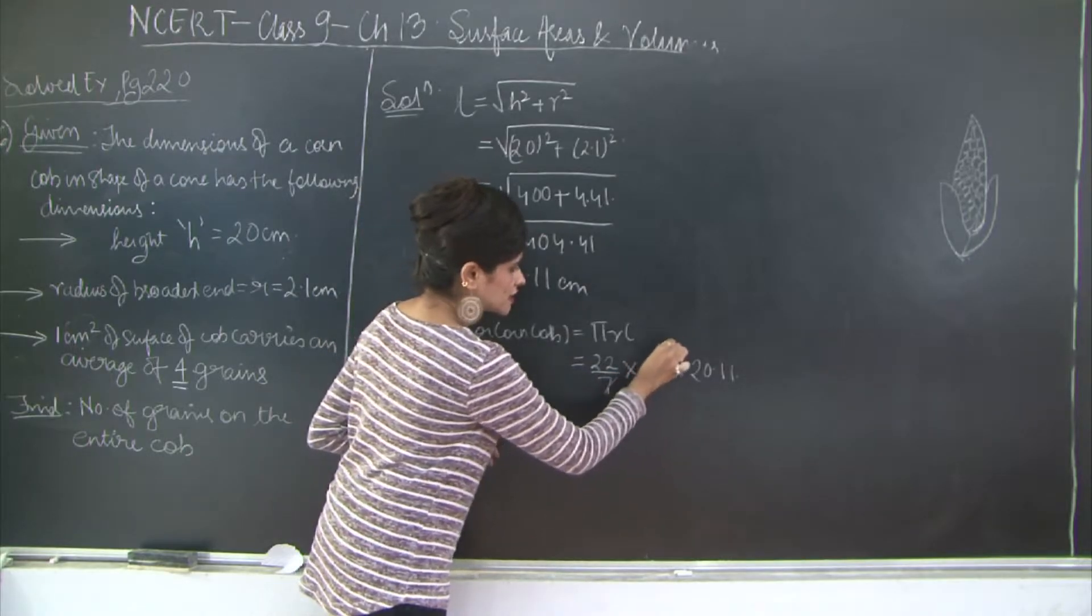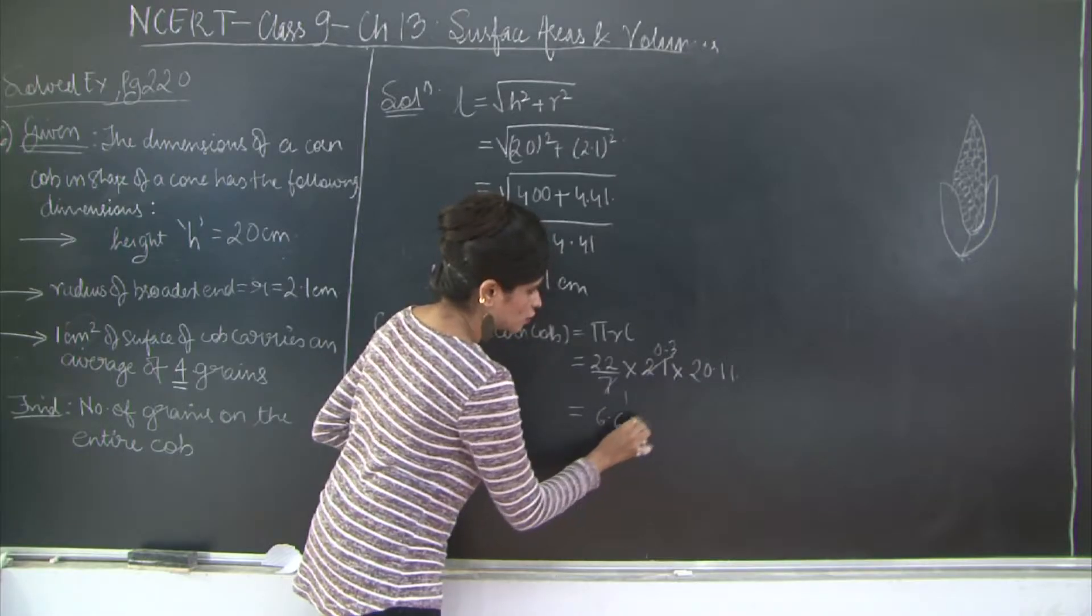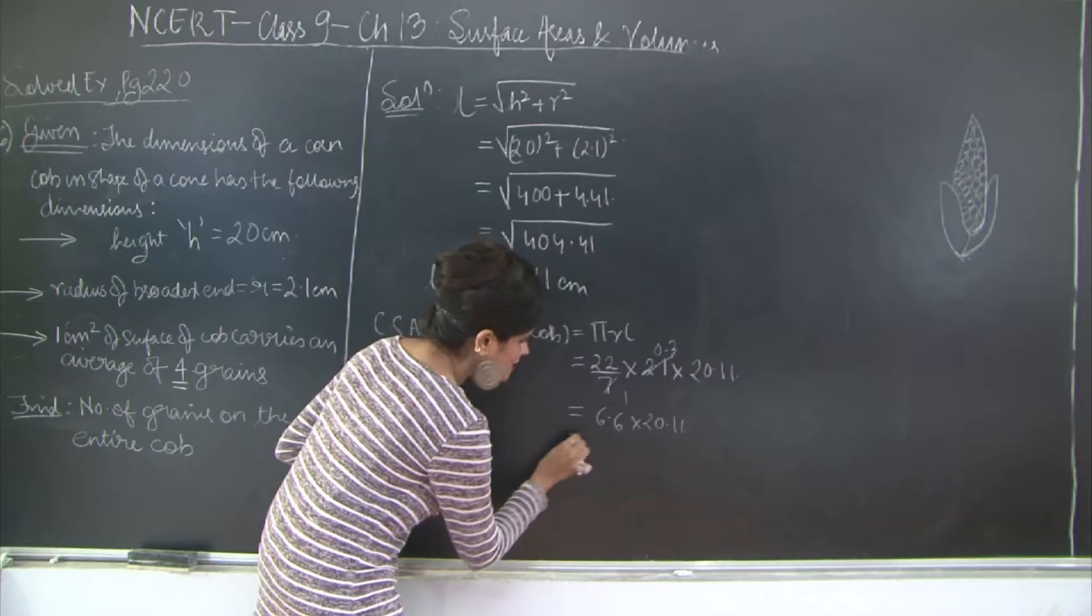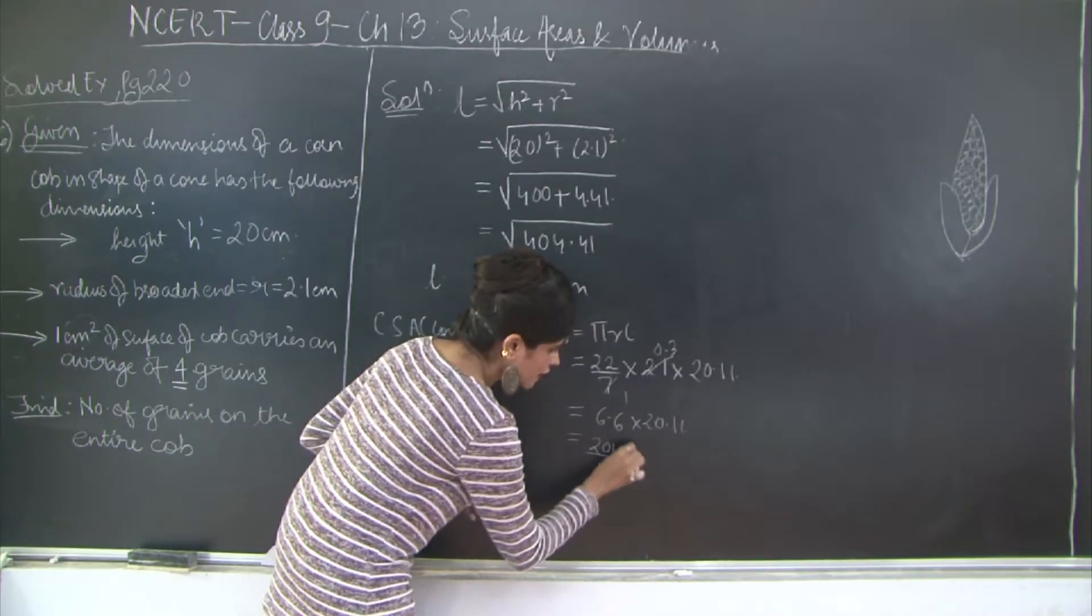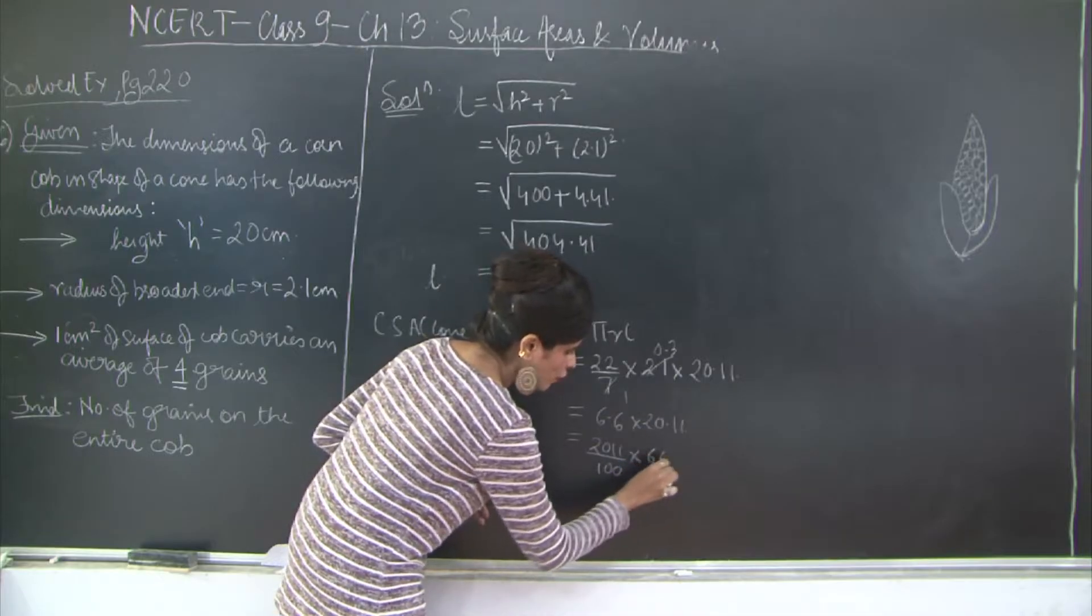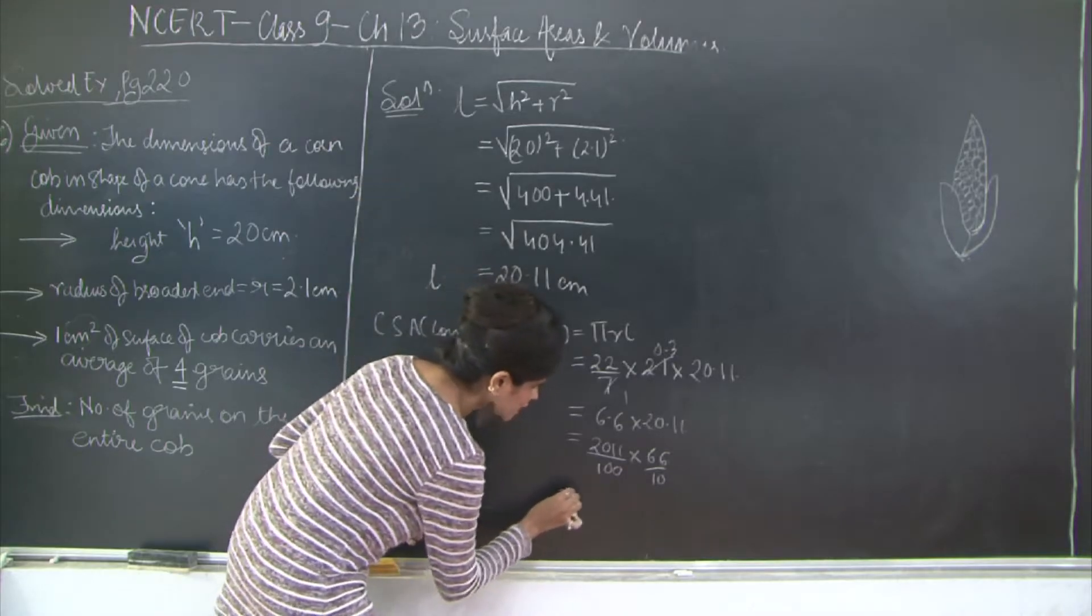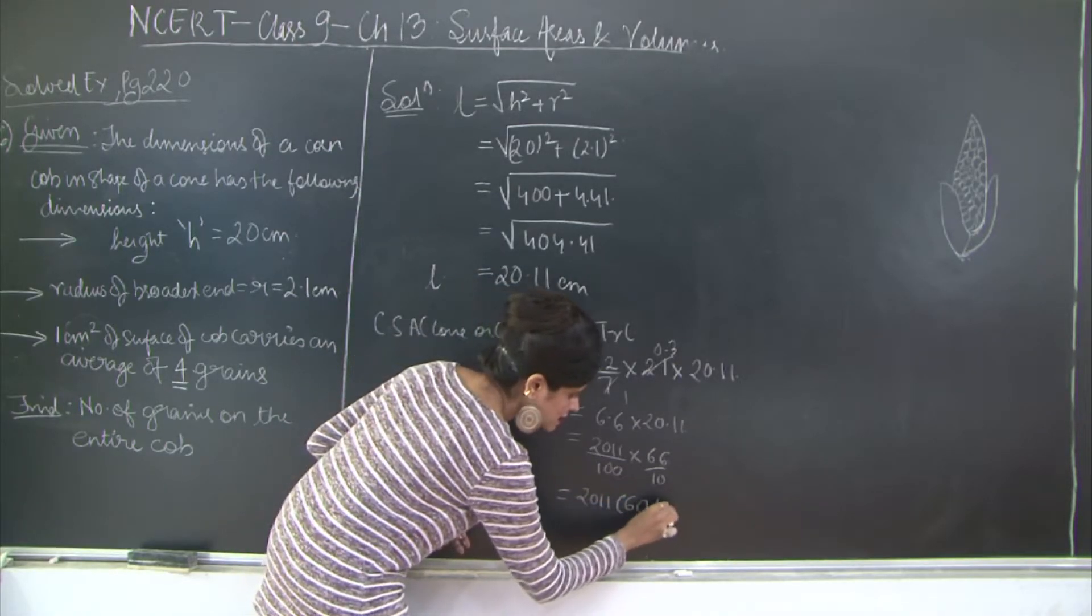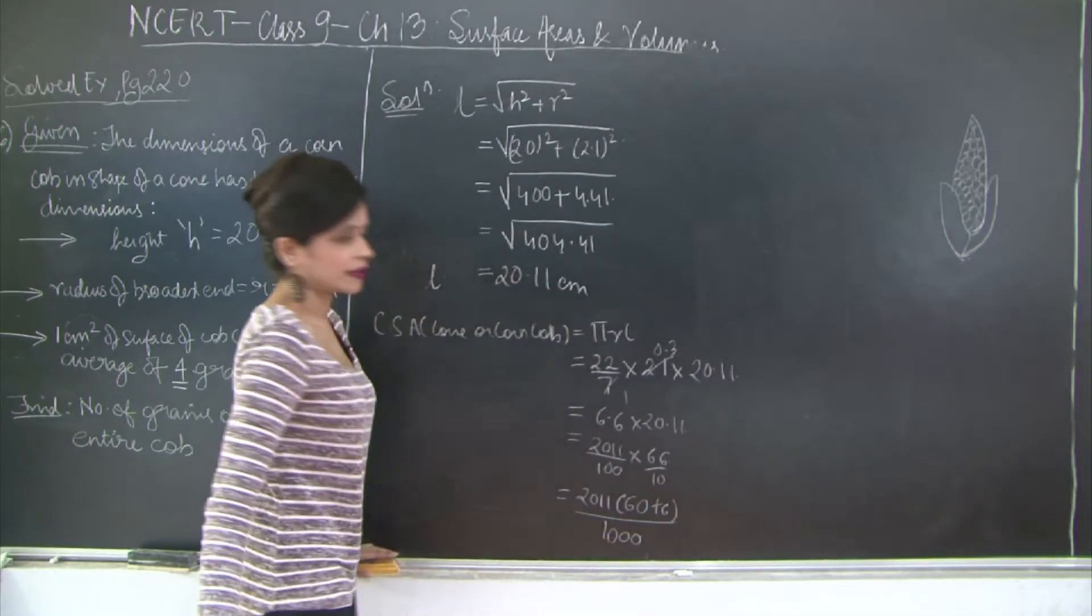So 7 ones are 7, 7 threes... so this would be 6.6 into 20.11. Let's rewrite this as 20.11 upon 100 into 66 upon 10, which can be further written as 20.11 into 60 plus 6 upon 1000.